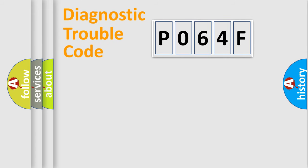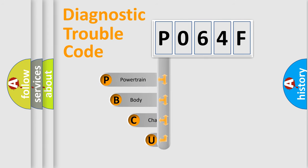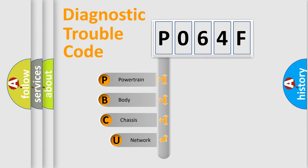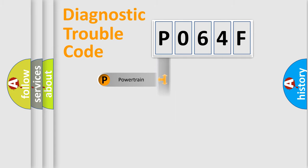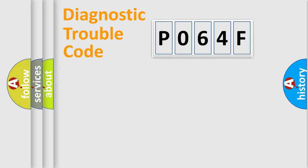First, let's look at the history of diagnostic fault code composition according to the OBD2 protocol, which is unified for all automakers since 2000. We divide the electric system of an automobile into four basic units: Powertrain, Body, Chassis, and Network.